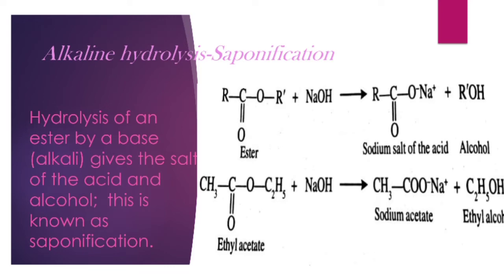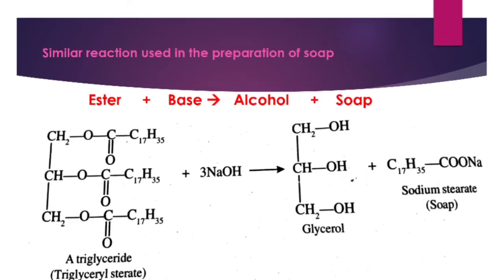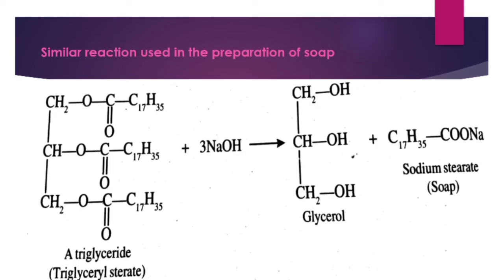For example, ethyl acetate reacts with NaOH to give sodium acetate and ethyl alcohol. A similar reaction is used in the preparation of soap by alkaline hydrolysis of oils or fats, which are glyceryl esters of long-chain fatty acids. Ester plus base gives alcohol and soap.